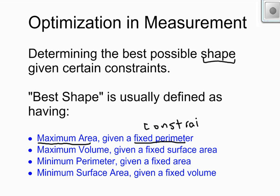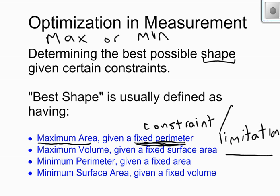So the fixed perimeter would be my constraint. It's the thing that limits me. So it's maximizing something when something else is fixed according to some sort of limitation. Perhaps you're trying to maximize volume given a fixed surface area, or minimize the perimeter, or minimize surface area. So optimization means that you're finding some sort of maximum or some sort of minimum, and you have some sort of limitation when you're trying to do that maximizing or minimizing.